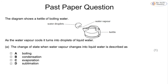One more past paper question: a kettle of boiling water produces water vapor which cools and turns into droplets of liquid water. The change in state when water vapor changes into liquid water is condensation — one mark.